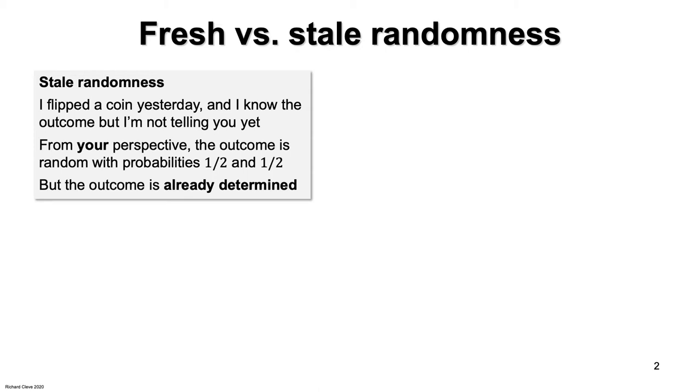Then, from your perspective, the outcome is a probability distribution. From your perspective, the outcome is heads with probability a half and tails with probability a half. But the outcome is already determined. Your probabilities just reflect a lack of information.